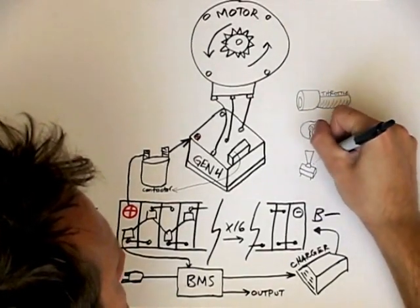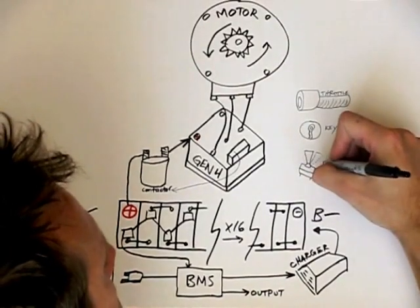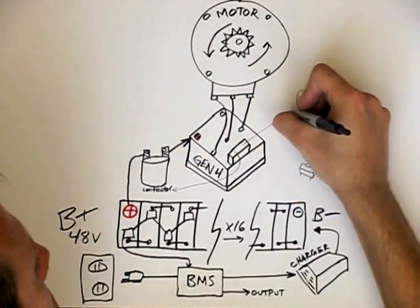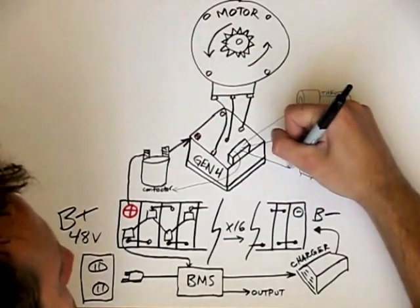Also plugging into the multi-pin connector is the key switch and the enable switch. The key will turn on the controller and the enable tells the controller it's okay to go forward.